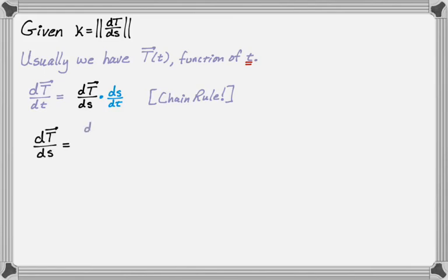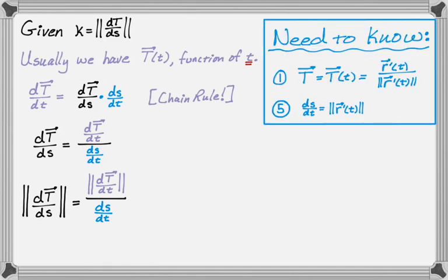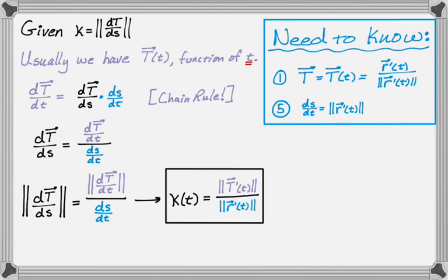From the chain rule, dT/dS is T prime divided by dS/dT. If we throw some magnitudes around these things, dS/dT is the magnitude of r prime — that's just positive and a scalar. So the magnitude of dT/dS equals the magnitude of T prime over the magnitude of r prime. By substitution, the curvature as a function of t can be expressed as the magnitude of T prime over the magnitude of r prime. That's another formula.